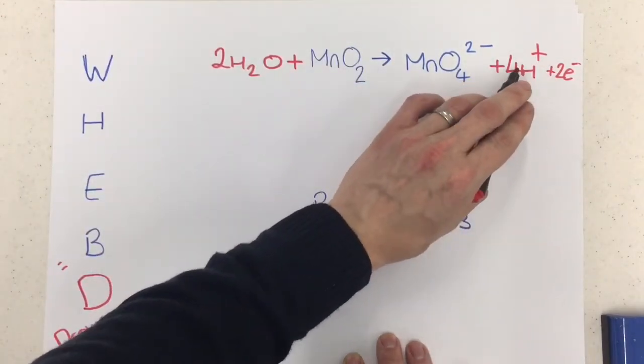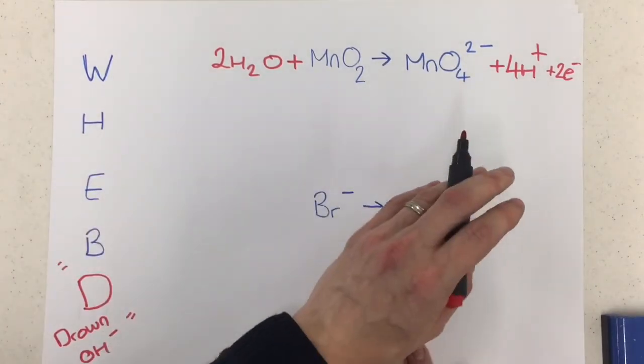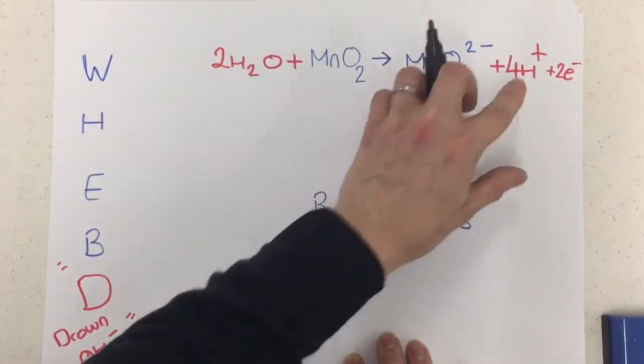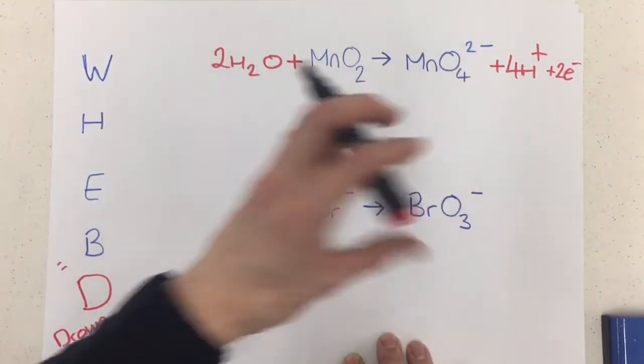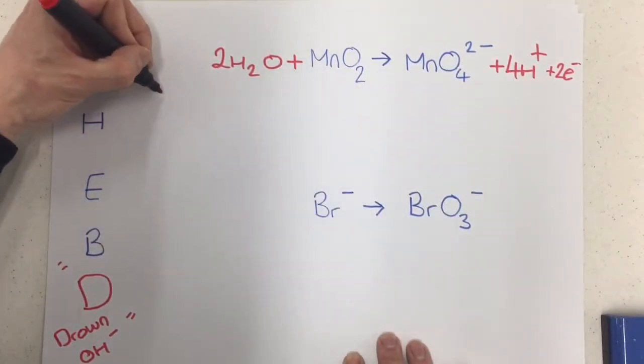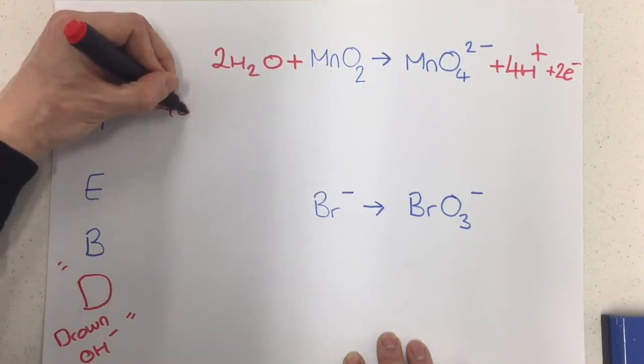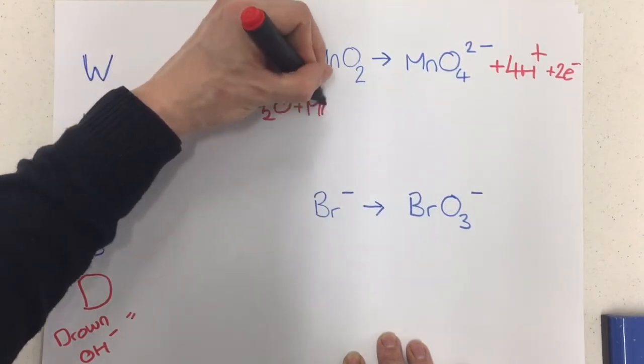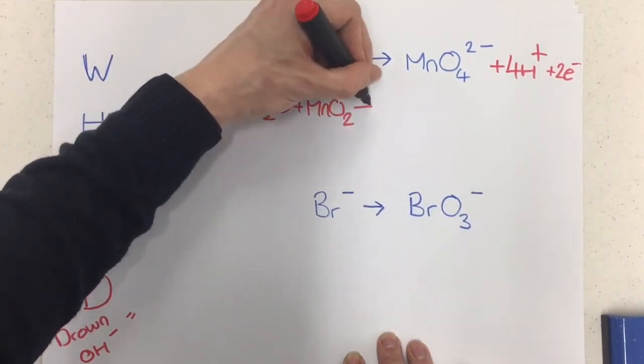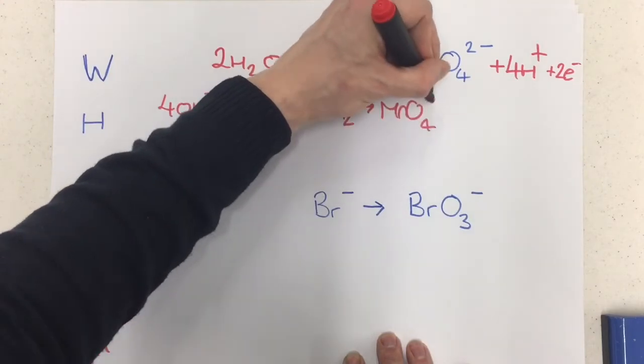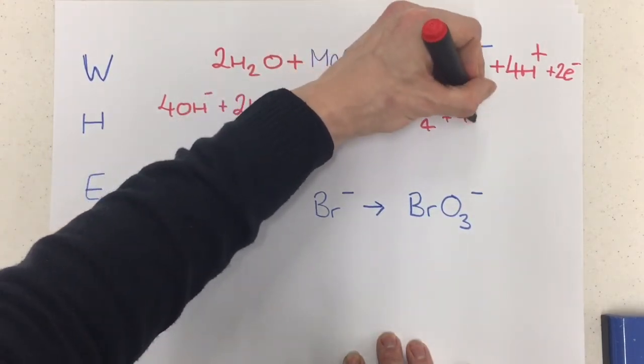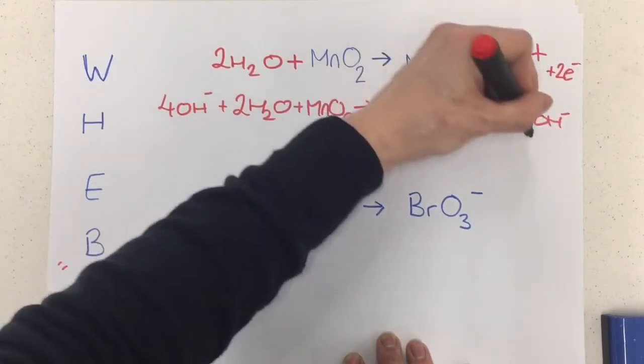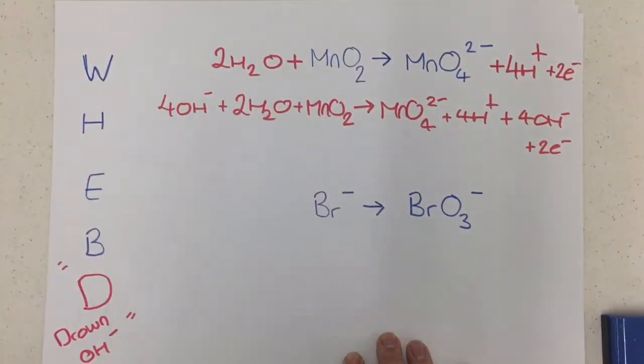You can see there's 4H+ here. So I'm going to write the equation again, but this time I'm going to add enough OH- to completely cancel out and turn these into waters. So let me show you what I mean. So I'm going to add 4OH- plus 2H2O plus the MnO2, which reacts to form the MnO4^2- 4H+ 4OH-, and I'll just chuck them in here, the two electrons like so.